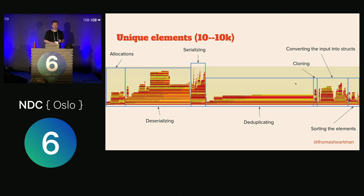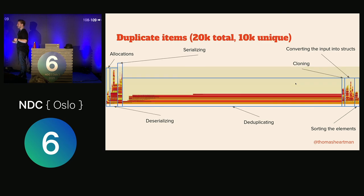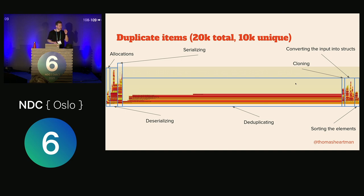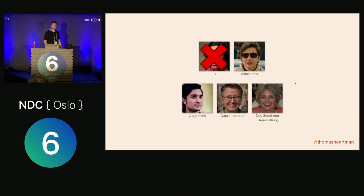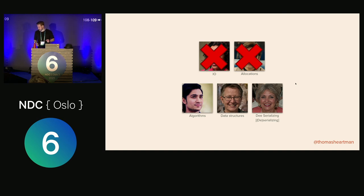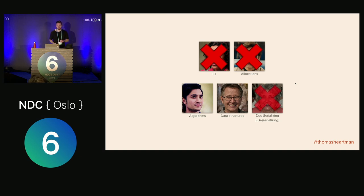That was for unique elements only. What happens when you've got 20,000 elements but only 10,000 unique ones? Deduplication goes through the roof — everything else is absolutely unimportant. So let's get the suspects back in the room. We can rule out IO since it didn't even appear on the graph. There were a little bit of allocations but they definitely didn't kill it. Deserialization and serialization did take a lot of time, but it wasn't the worst thing. We're left with algorithms and data structures — they're commonly talked about together and really influence each other.